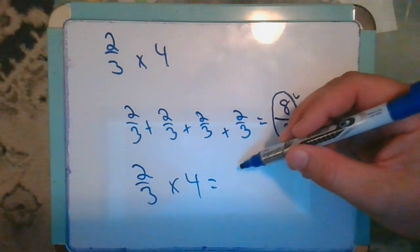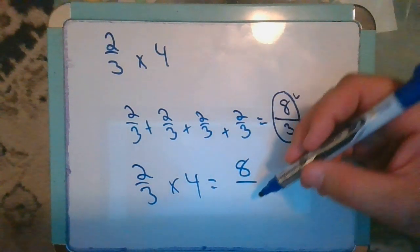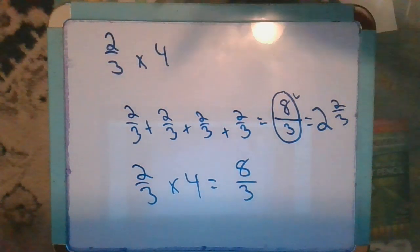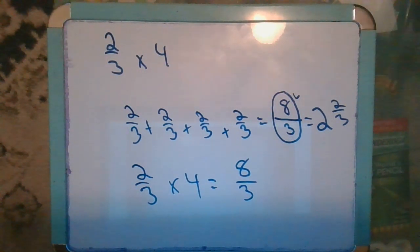So two times four is eight, and my denominator remains the same, which makes sense because with repeated addition, the only part that changes is the numerator. That's the part I was doing the repeated addition for. The denominator did not change.